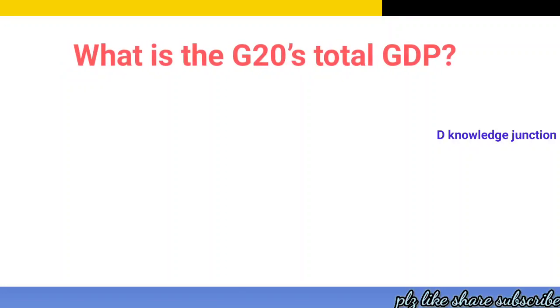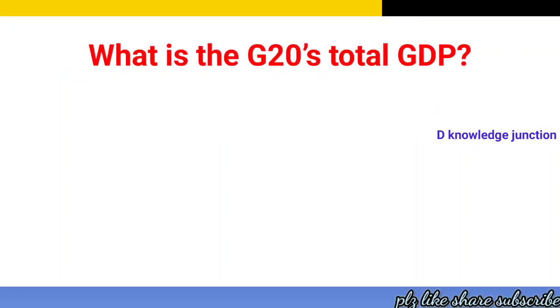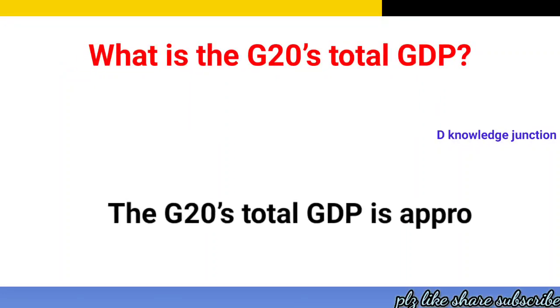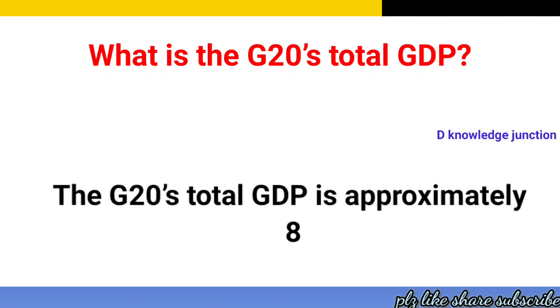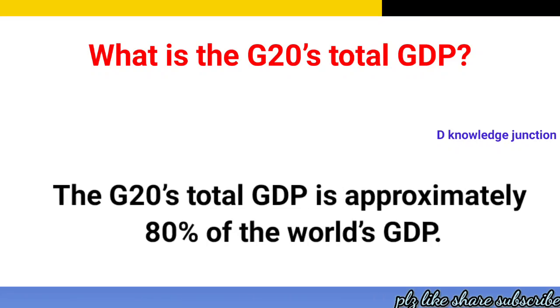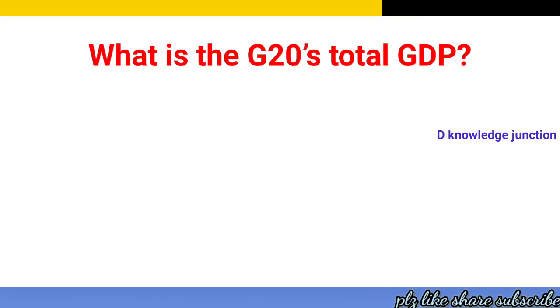What is the G20's total GDP? The G20's total GDP is approximately 80% of the world's GDP.